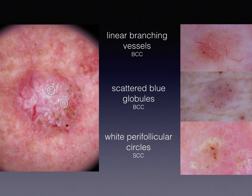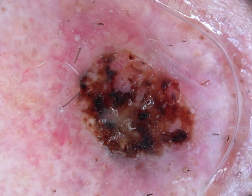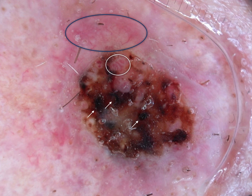One more example: a hyperkeratotic elevated lesion. On dermoscopy, we can see blood crusts — blood in keratin — which is a clue for squamous cell carcinoma. Within a circle, there are also vessels surrounded by white halos, again a clue for SCC. But on the upper part of the lesion, there are completely different vessels — linear, somehow branching — which is a clue for basal cell carcinoma. So again, a combination of SCC and BCC clues.